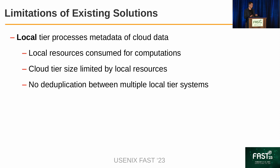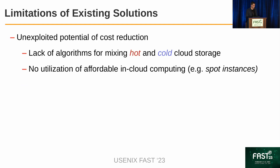Current solutions for cloud tiering with deduplication have important limitations. They process all deduplication and metadata on the local tier, which consumes local resources. Also, the size of the cloud tier is limited because local resources are constrained, and deduplication between multiple local tier systems is impossible since each system conducts deduplication independently. Moreover, cloud provides many ways to decrease storage and computing costs — for example, spot instances allow decreasing computation cost by 10 times compared to regular cloud instances.